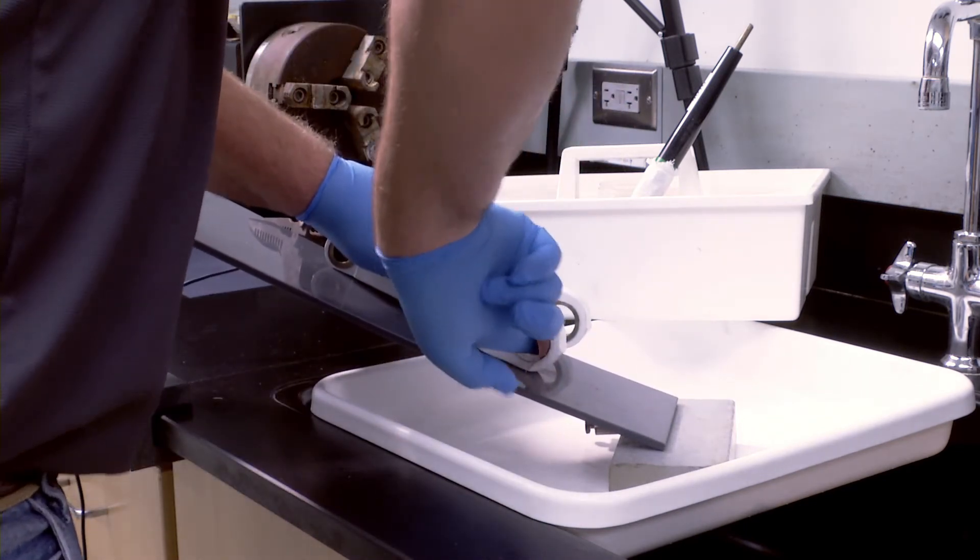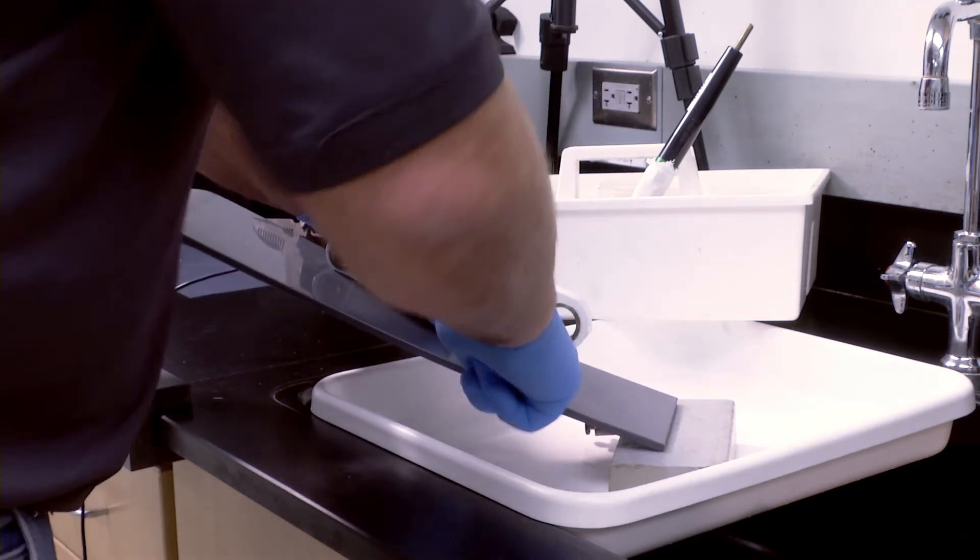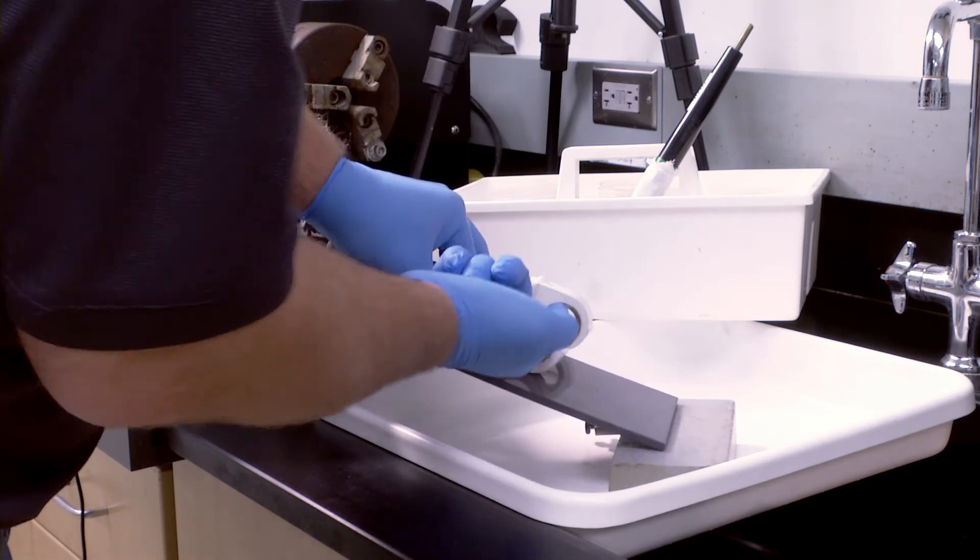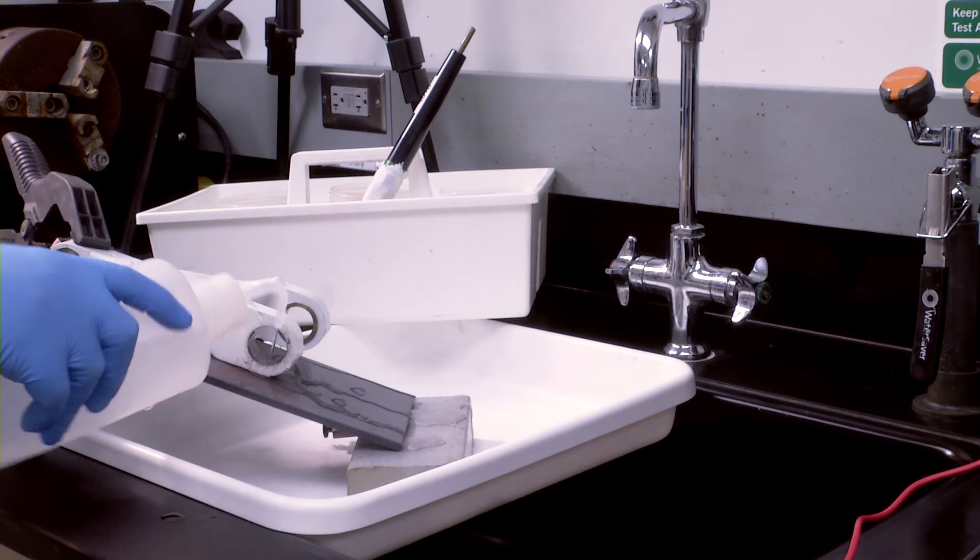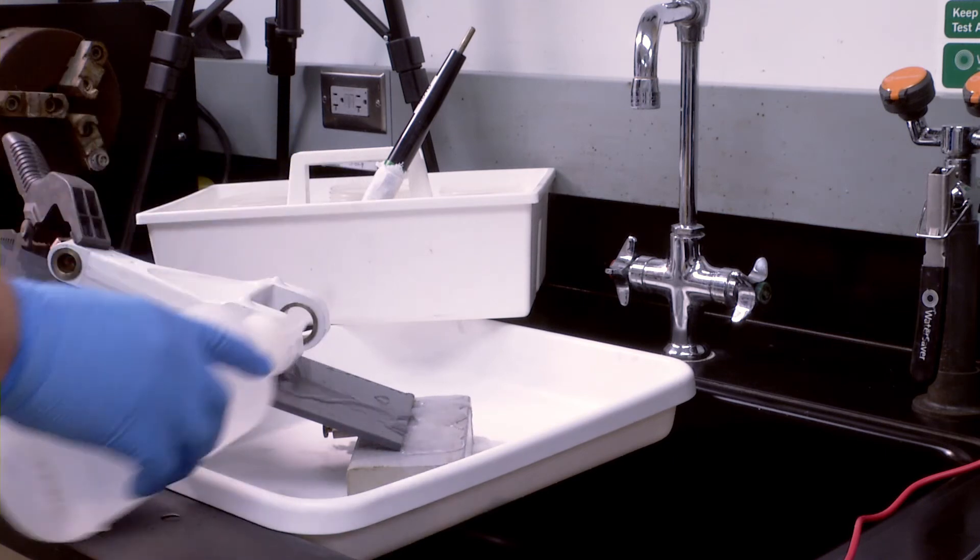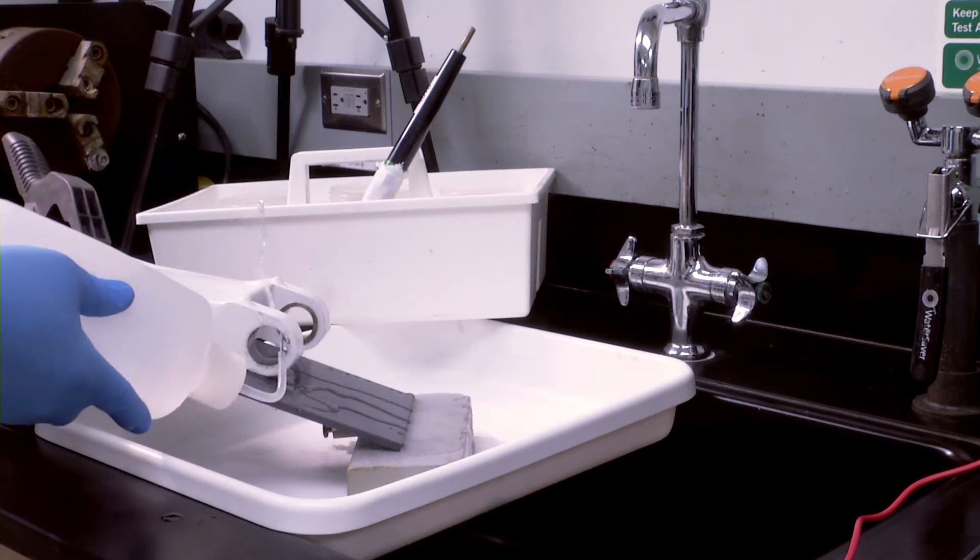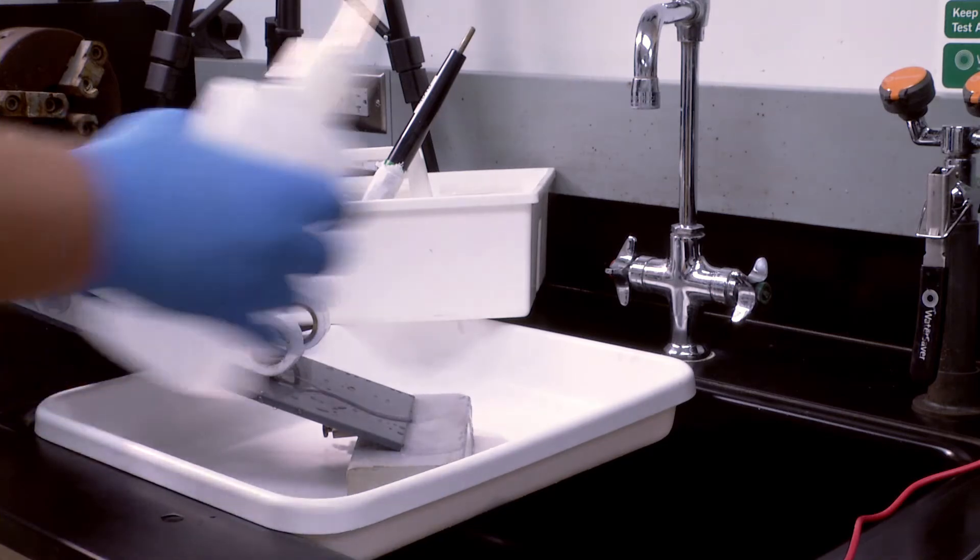After solvent cleaning, the part is mechanically abraded with 120 grit aluminum oxide to roughen the surface. The diameter is thoroughly rinsed with deionized water. Note that no masking is required for this application since the paint on the areas adjacent to the bushing diameter serves as a mask.